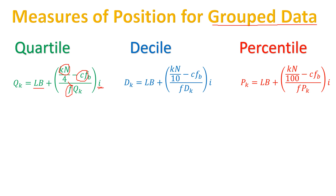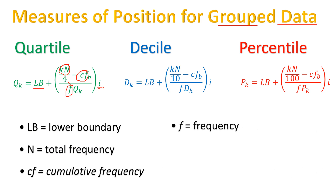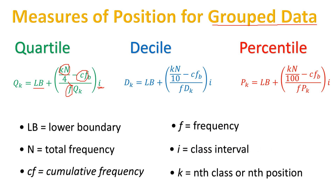LB means lower boundary. N means total frequency. CF means cumulative frequency. F means frequency. I means class interval. And K represents the nth class or the nth position that we are asked to look for.